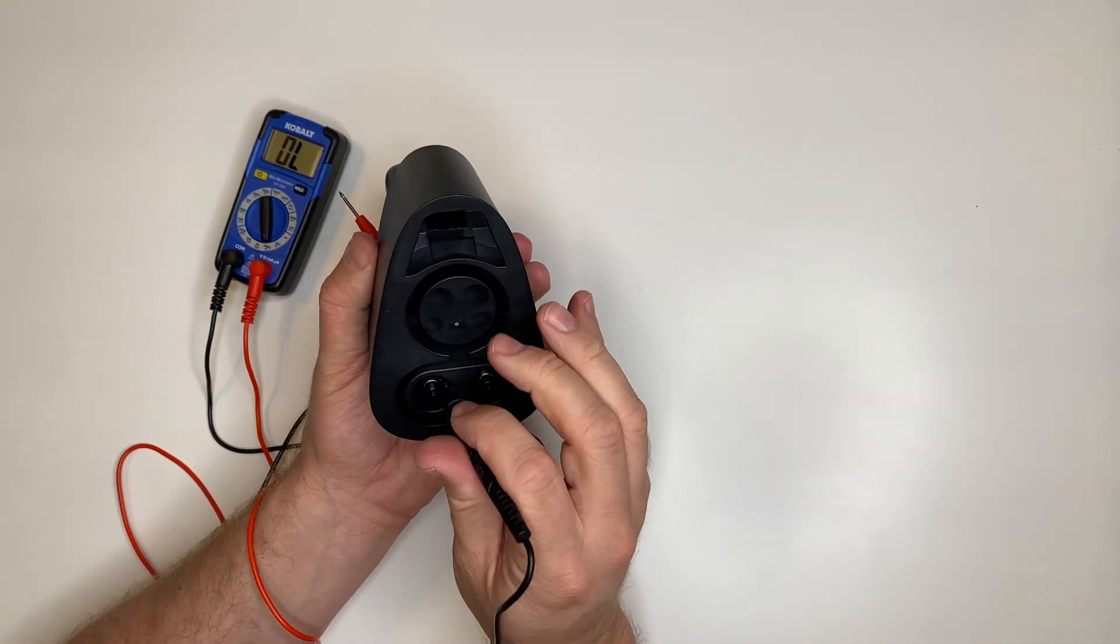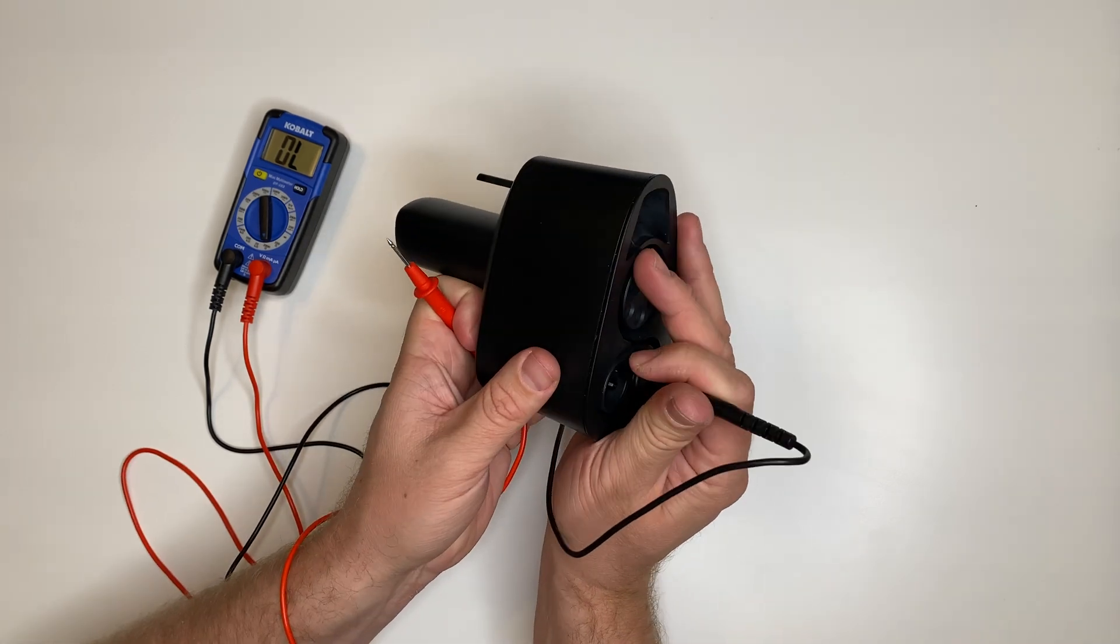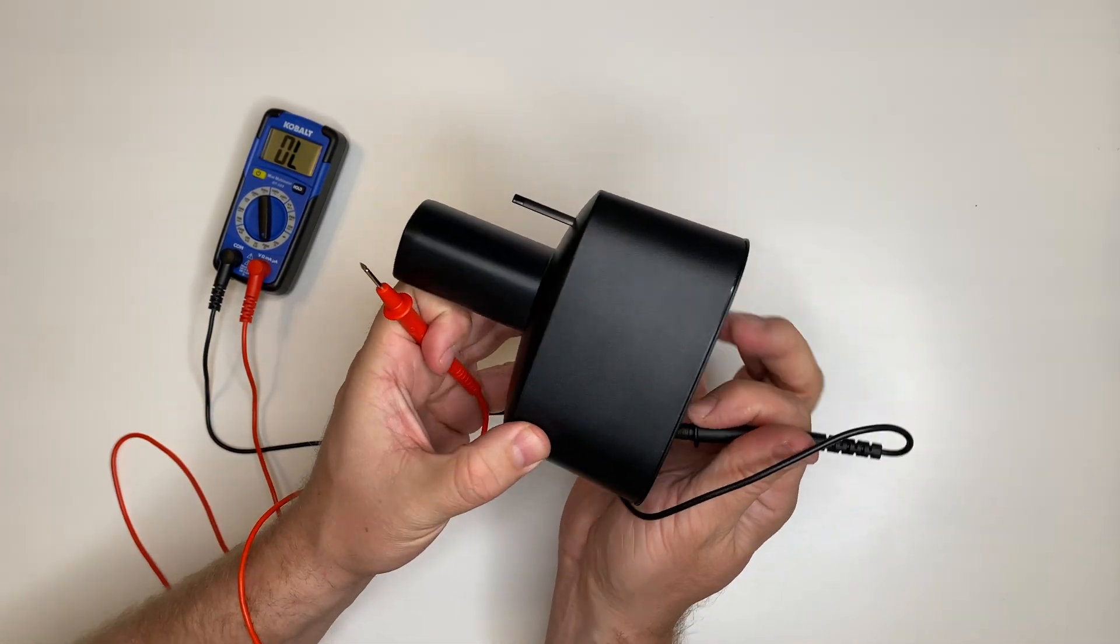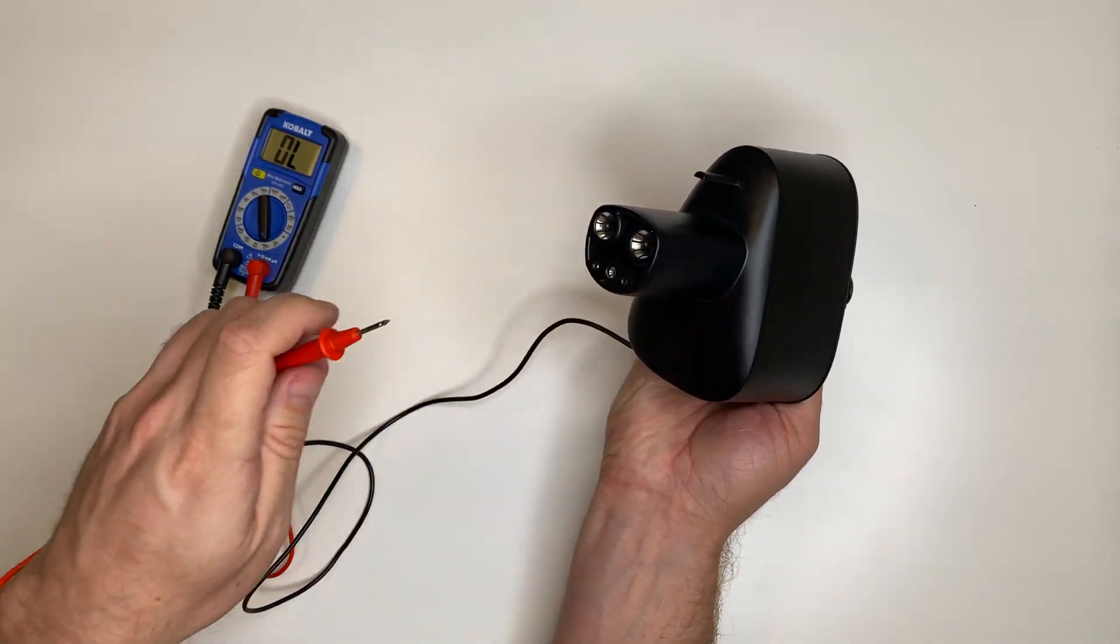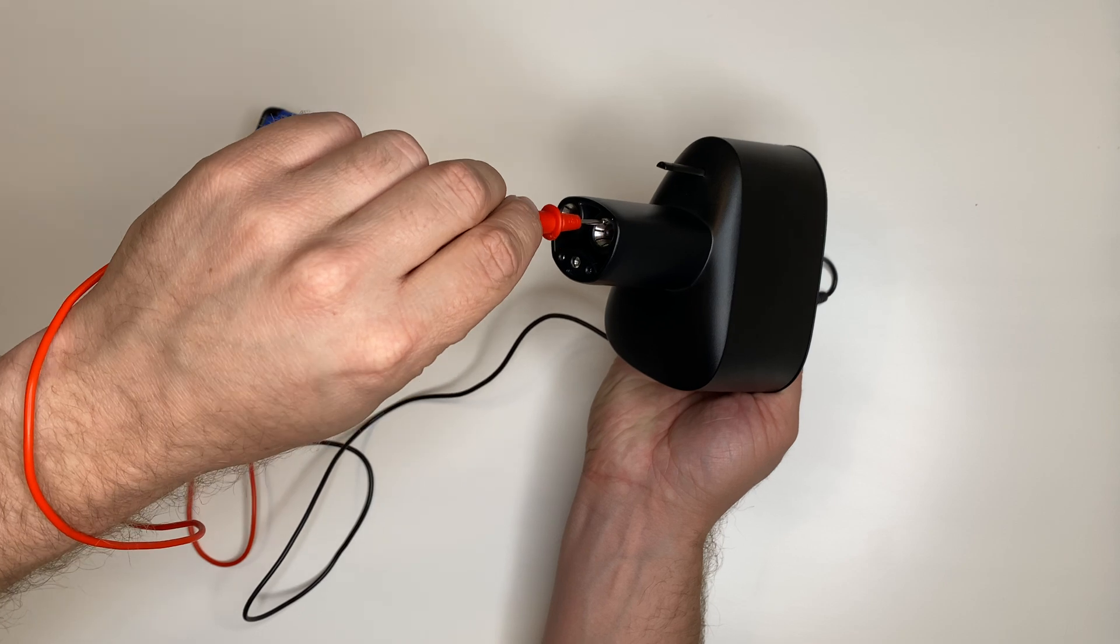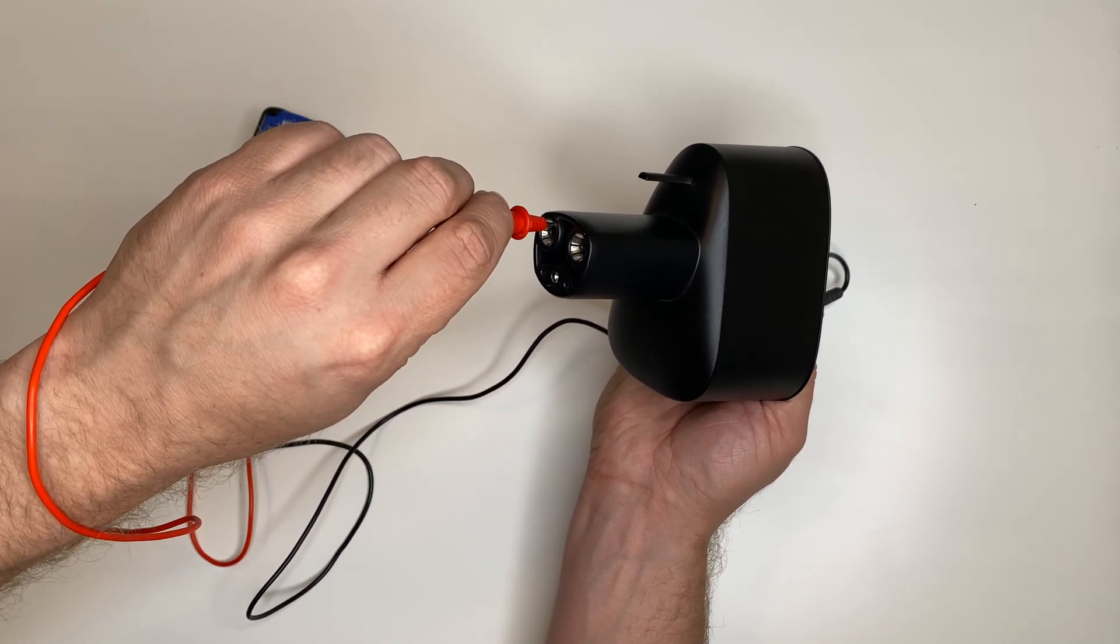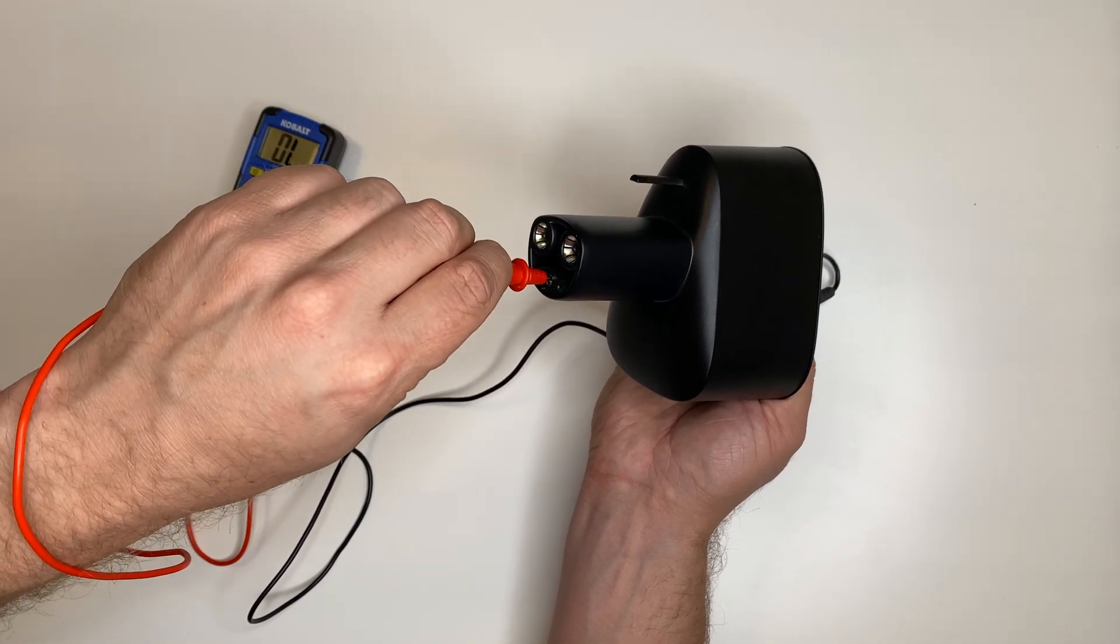As we do the opposite on contact 7, which is DC negative, it connects to this one here with no resistance and no connection to any of the other pins.